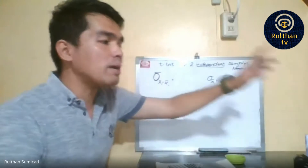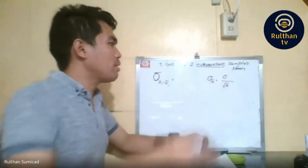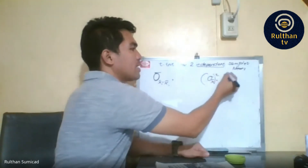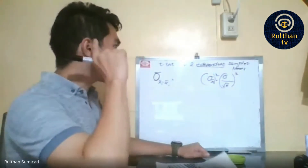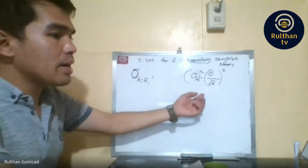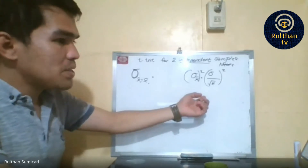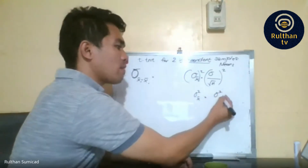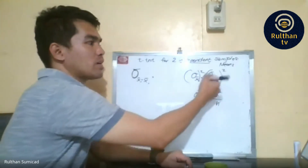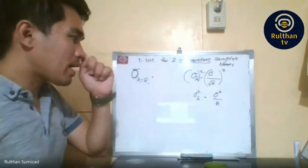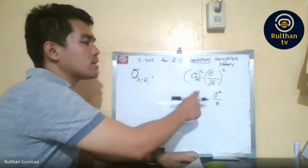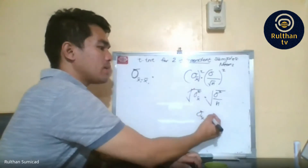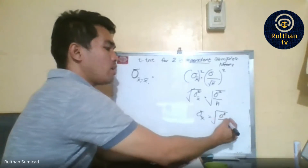Our standard error before was given as sigma X-bar, which is the population standard deviation divided by the square root of the sample size. Now, if we square both sides, we get sigma squared X-bar equals sigma squared over n. Applying the square root, the result simplifies so that sigma squared equals the square root of sigma squared over n.